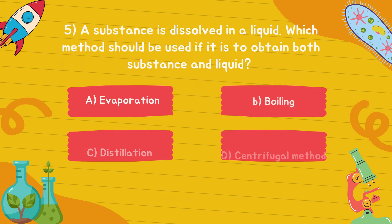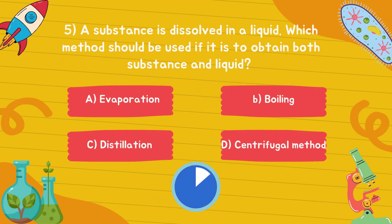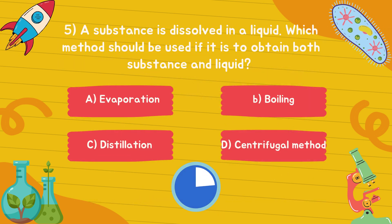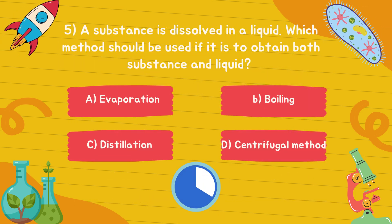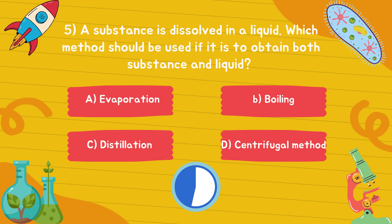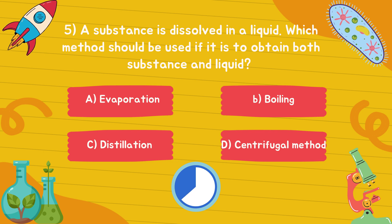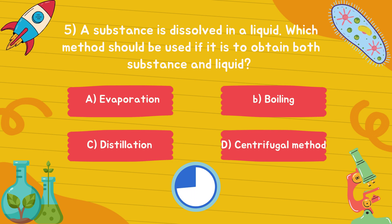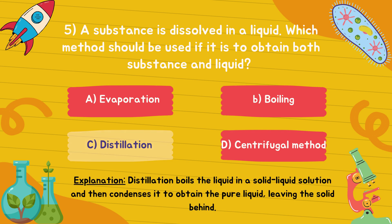A substance is dissolved in a liquid. Which method should be used if it is to obtain both the substance and the liquid? Answer is option C, distillation.